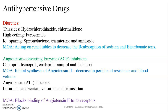The second class is angiotensin-converting enzyme (ACE) inhibitors, including captopril, lisinopril, enalapril, ramipril, and fosinopril. These drugs inhibit angiotensin 2 and decrease peripheral resistance and blood volume. The next class is angiotensin receptor blockers (ARBs) — AT1 and AT2 receptors exist, and angiotensin 2 acts on AT1 receptors relating to blood pressure. Drugs such as losartan, candesartan, valsartan, and telmisartan block the binding of angiotensin 2 to its receptors.